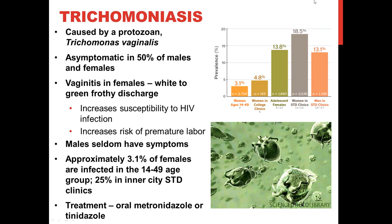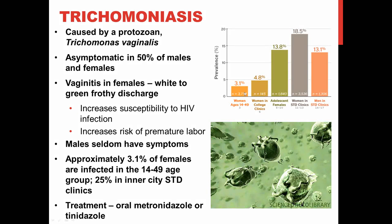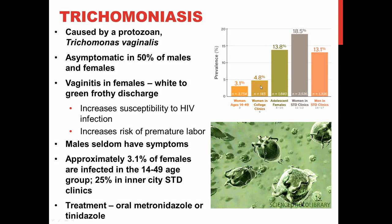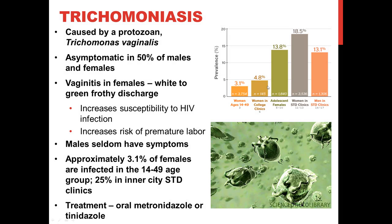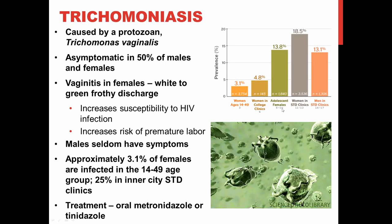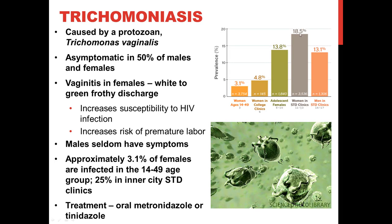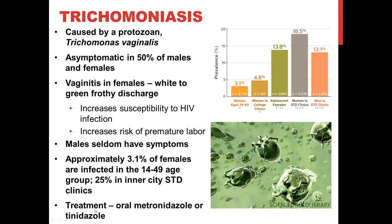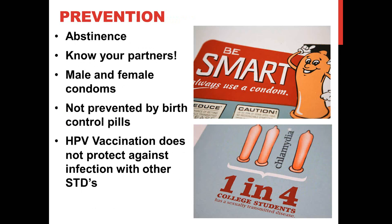Looking at prevalence data: among women ages 14 to 49 across the country, about 3.1% are infected; about 4.8% of women who go into college health clinics have trichomonas; 13.8% of adolescent females; 18.5% of women who go to STD clinics; and 13.1% of males. This is pretty widespread in the population. We do have good drugs to treat it — metronidazole or tinidazole are both effective against this organism.